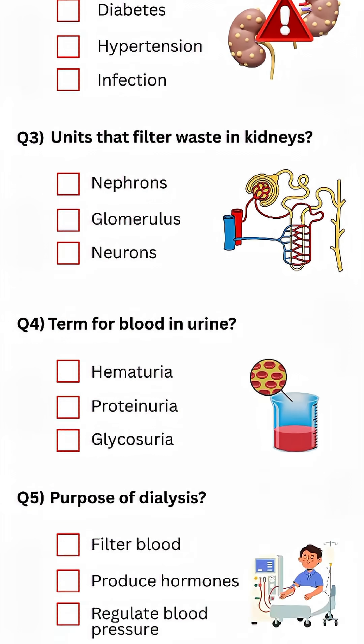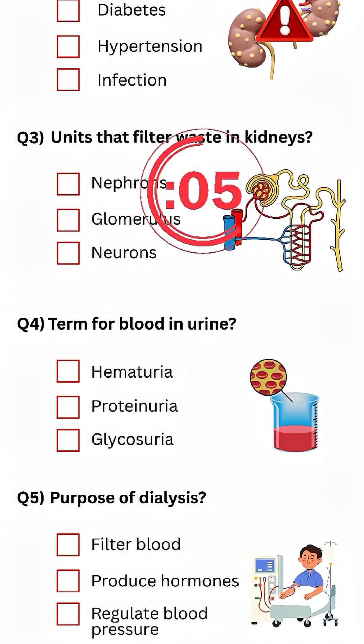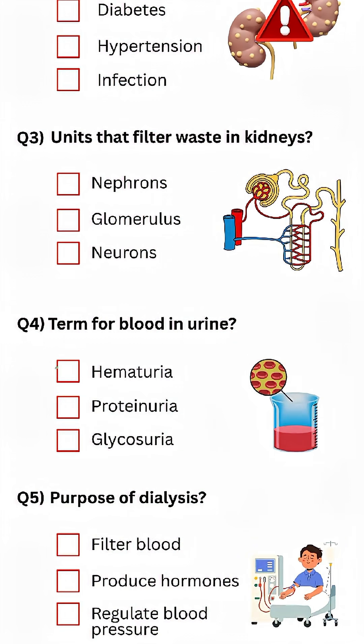Question four: term for blood in urine? Answer: hematuria.